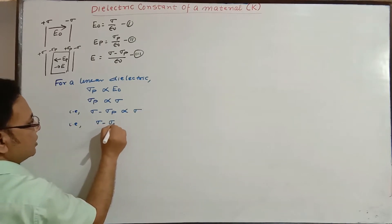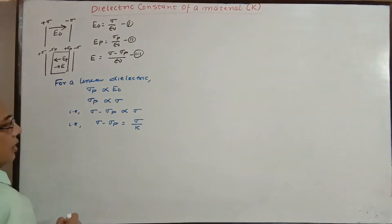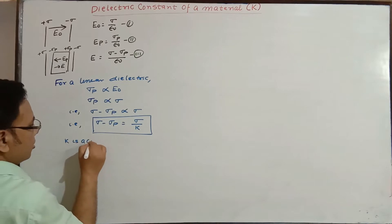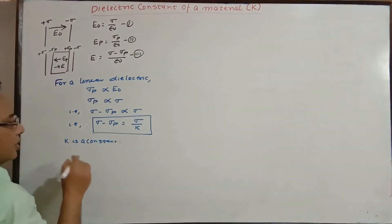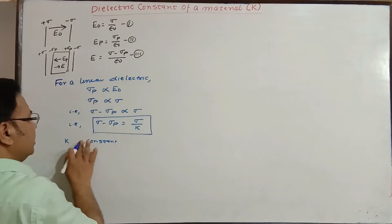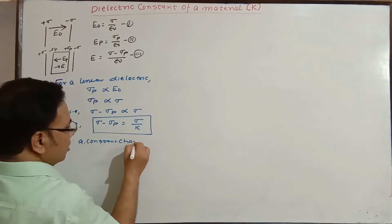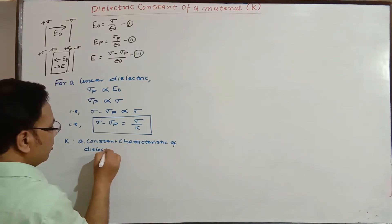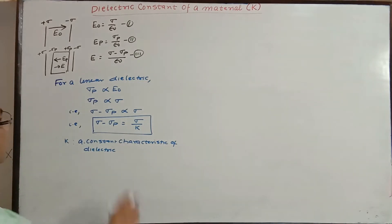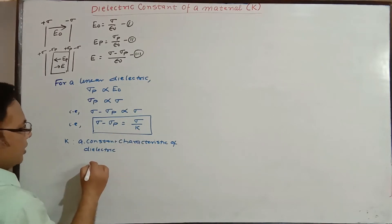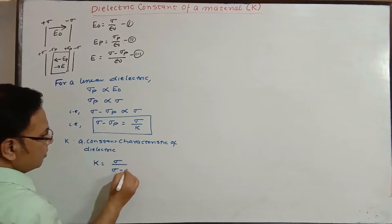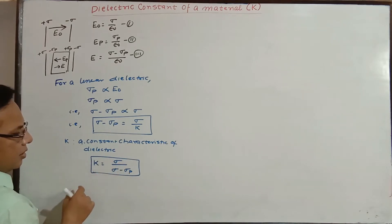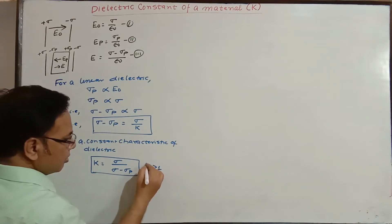On removing the proportionality sign, we put a constant 1/k. Here k is a constant characteristic of the given dielectric or medium. From this, k = σ/(σ - σₚ). Since σ - σₚ is obviously less than σ, the value of k is greater than 1.